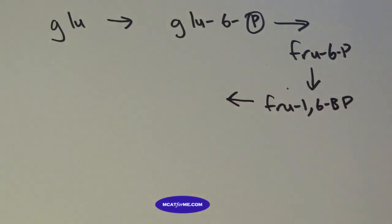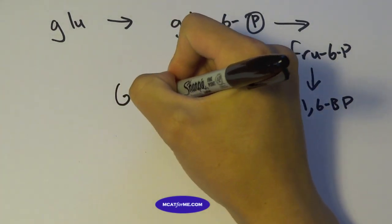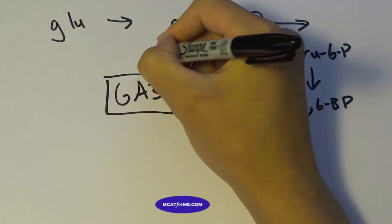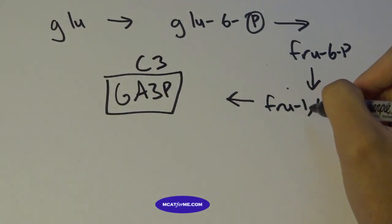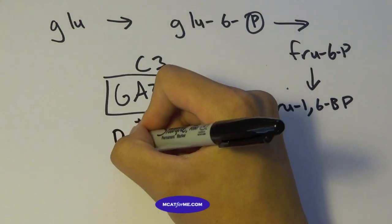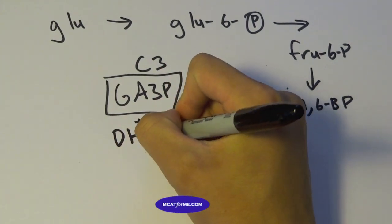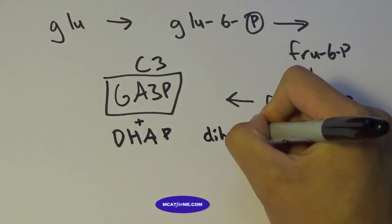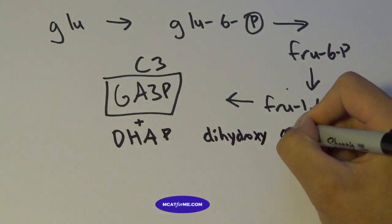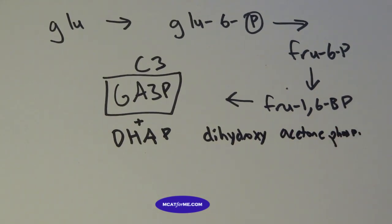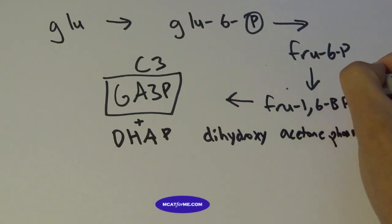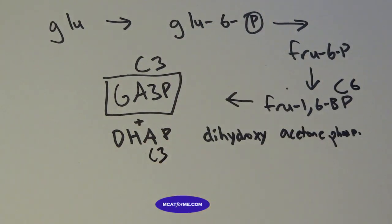And then from there, we're going to go into something called GA3P. And this is our first 3-carbon intermediate. That's the one thing you need to remember about GA3P. So between fructose 1,6-bisphosphate, we're going to get GA3P and something called DHAP, which is dihydroxyacetonephosphate. And you can kind of draw it out if you want. It's not important what it looks like right now. But from fructose 1,6-phosphate, which is a 6-carbon molecule, we're going to break it down into 2 3-carbon molecules.